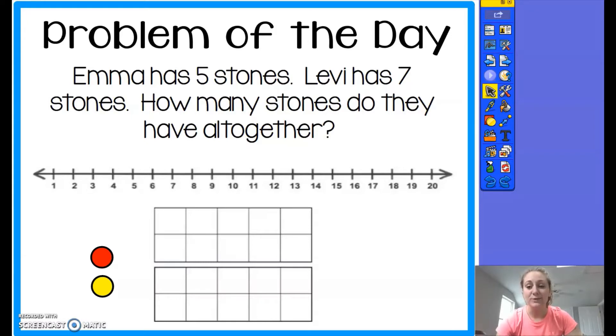Many of my first-grade friends said that they used their fingers to solve the problem. I'm hoping that means they used the counting on strategy—they put a number in their head and then counted on the rest. For example, Levi has seven: seven, eight, nine, ten, eleven, twelve. You get a total of twelve altogether.